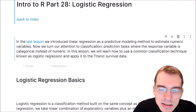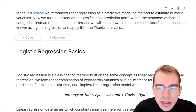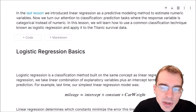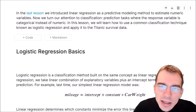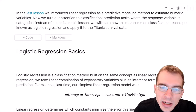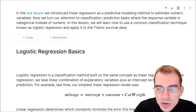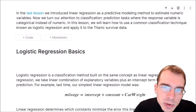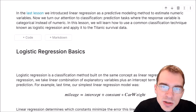In the last lesson we introduced linear regression as a predictive modeling method for estimating a numeric target variable. Now we're going to turn our attention to the classification task, which is making predictions where the outcome or target has one of several class labels. It could be only two, in which case it's a binary classification — that is what logistic regression is used for. Classification can also be extended to multiple categories using other techniques.